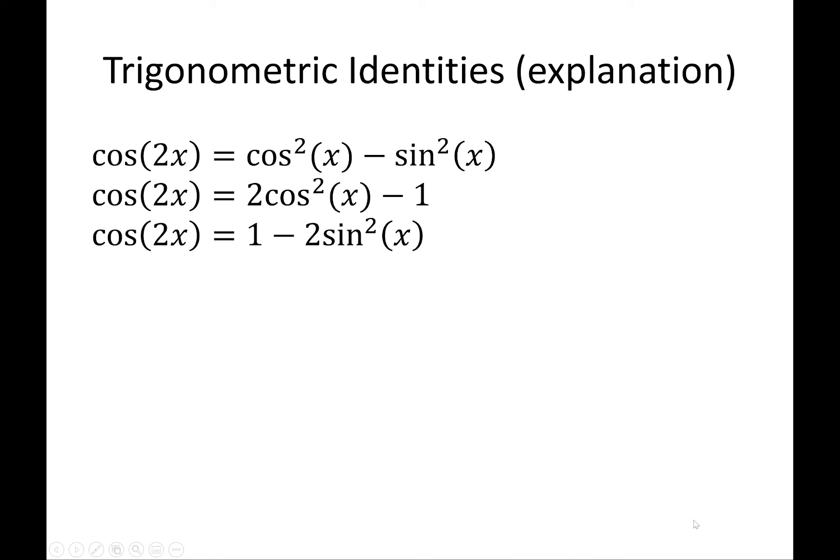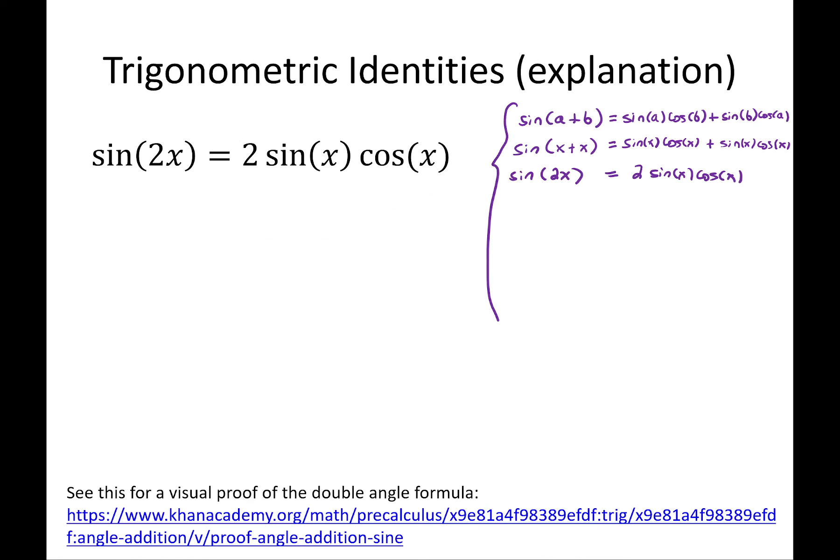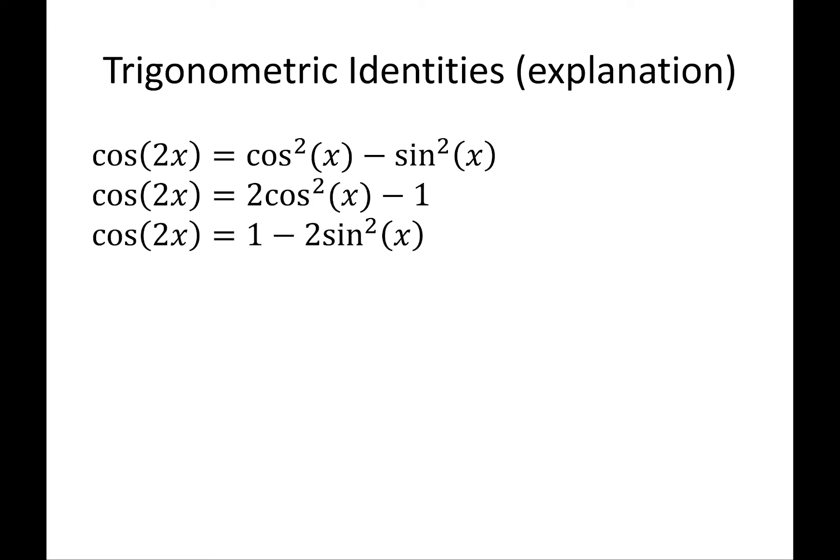So unlike the trig identities for the sine of 2x, which only has one form, sine of 2x is 2 sine x cosine x, there's three different formulas for the cosine of 2x.